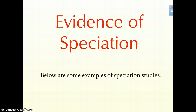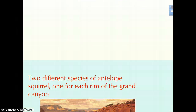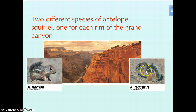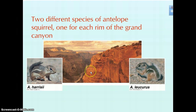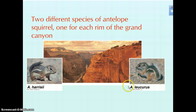How do we see speciation occurring in nature and in labs? There are lots of different ways we can observe this. You have these tiny little squirrels that live on either side of the Grand Canyon — they've got a major geographic barrier, so they've been separated for millions of years and have had their gene flow restricted.